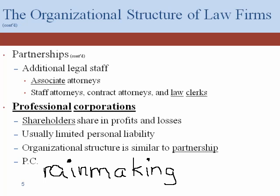Associate attorneys sometimes become staff attorneys through two paths. The first is they may not make partner. When I started practicing back in the early 90s, it was 'up or out' — if you didn't make partner, you were politely shown the door. That is less true now. If you have an associate who just wasn't quite partnership material, or where there were economic factors, they might be transitioned into staff attorney.